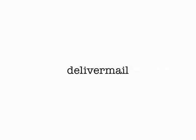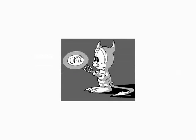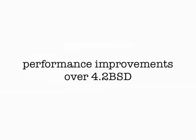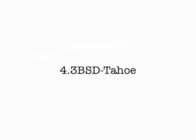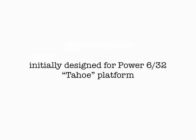And the list goes on. By 4BSD we had job control, delivermail — a precursor to sendmail — and the curses libraries by 1981. At 4.1BSD we had already ported it to VAX, addressing a number of performance issues. In 1983, 4.2BSD introduced TCP/IP from BBN and the Berkeley Fast File System from Kirk McKusick, who also brought us the original BSD daemon. In 1986, 4.3BSD introduced performance improvements over 4.2BSD. By 1988, we had 4.3BSD Tahoe, originally intended to run on the Power 6/32 Tahoe platform.